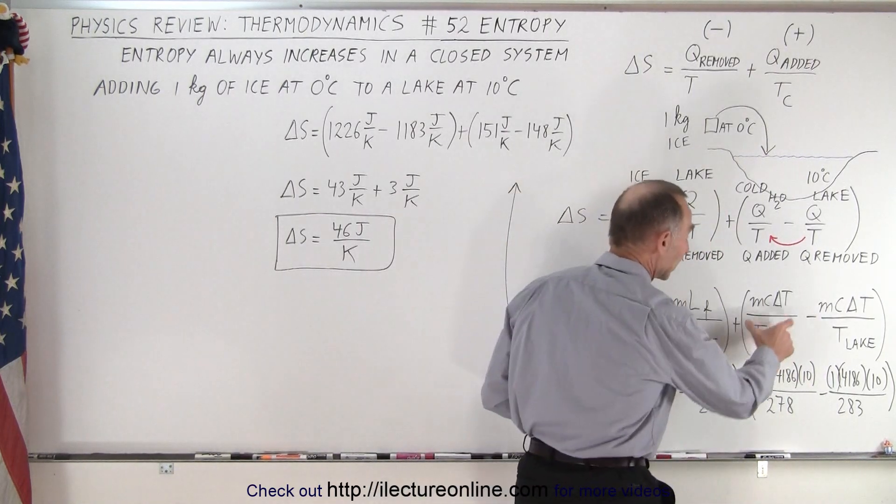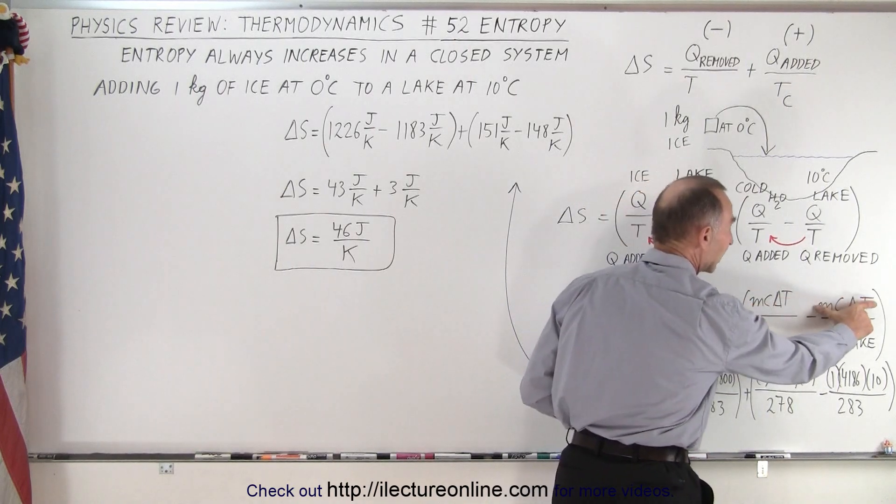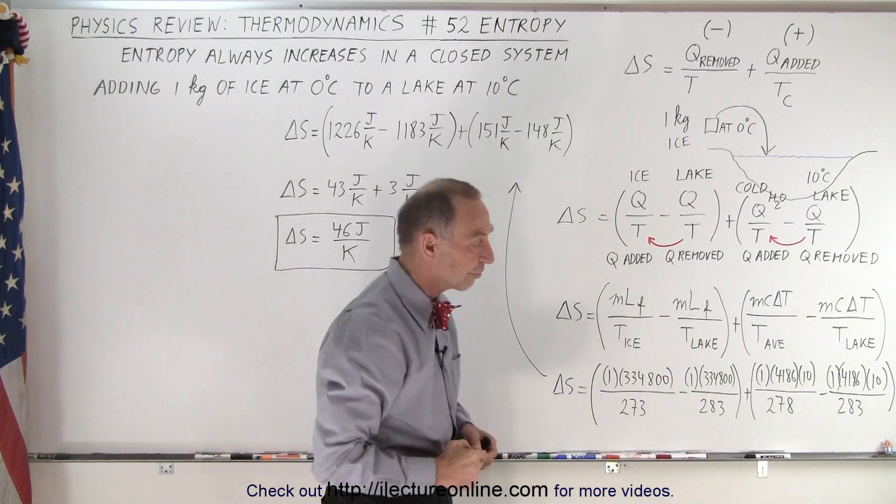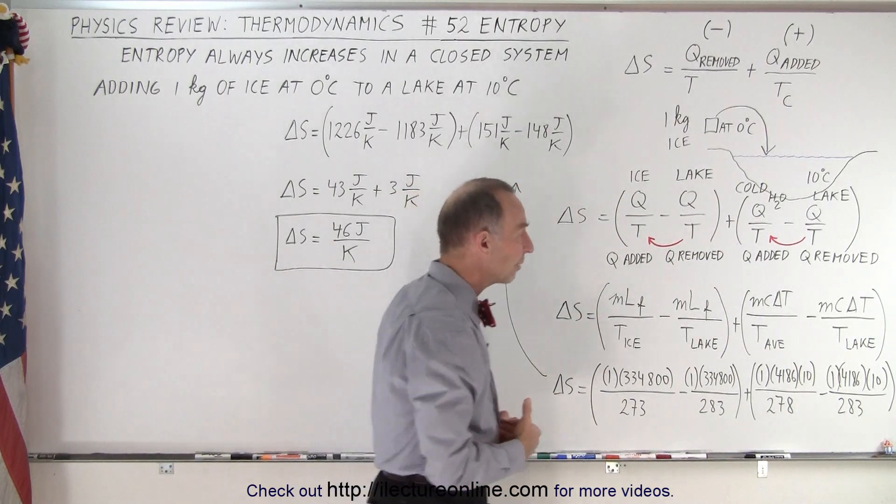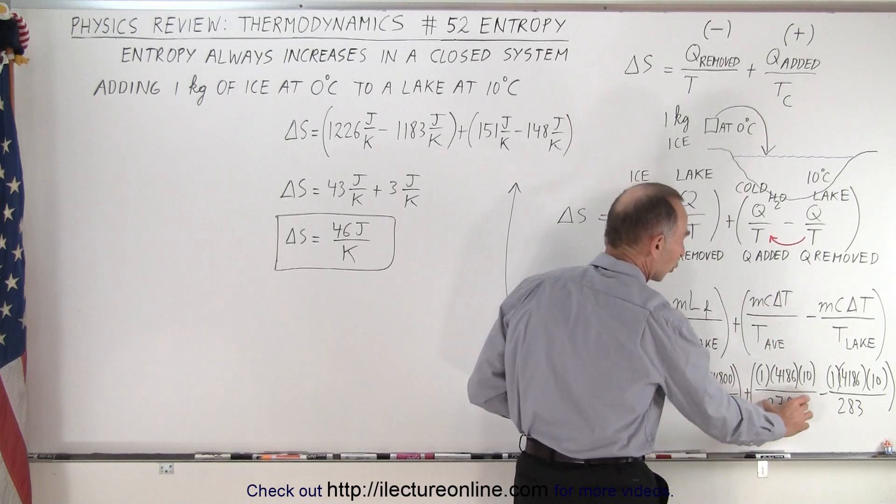Of course, again, the amount of heat required for the cold water to go up to 10 degrees Celsius is the amount of heat that must come from the lake, so we can use the very same numerator in both fractions. The denominator, however, the temperature here in the denominator will be the average temperature of the cold water,